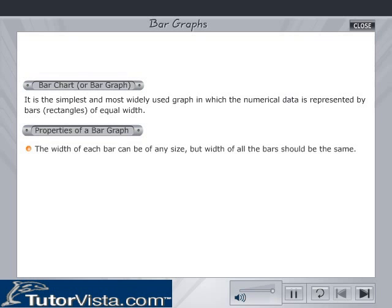We shall now list some properties of bar graphs. The width of each bar can be arbitrarily chosen, but the width of all the bars should be the same. The space between consecutive bars should also be the same. The height or length of a bar is proportional to the numerical data it represents.